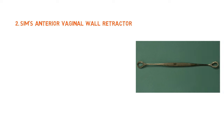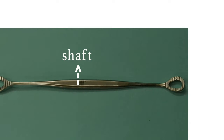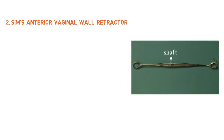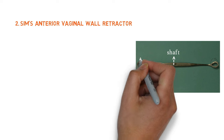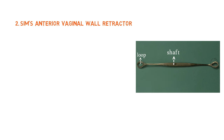Our next instrument is the Sims' anterior vaginal wall retractor. You can see it is a long metallic instrument with a slightly angulated fenestrated end and a central handle, which is also known as the shaft. You can see these are the serrations or fenestrated ends, and their significance is to fit into the rugosities of the vagina to give a better grip.